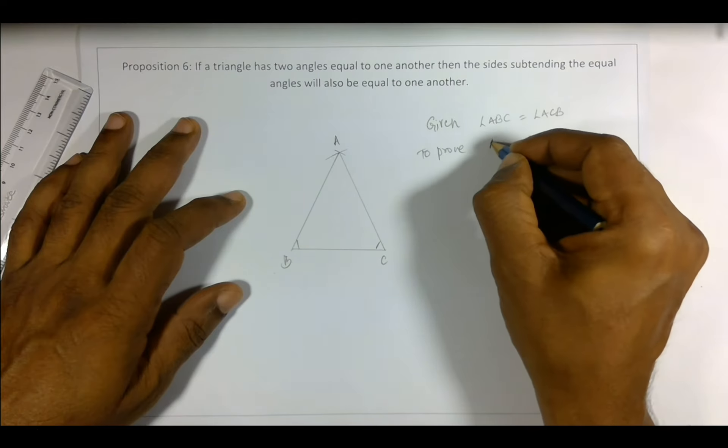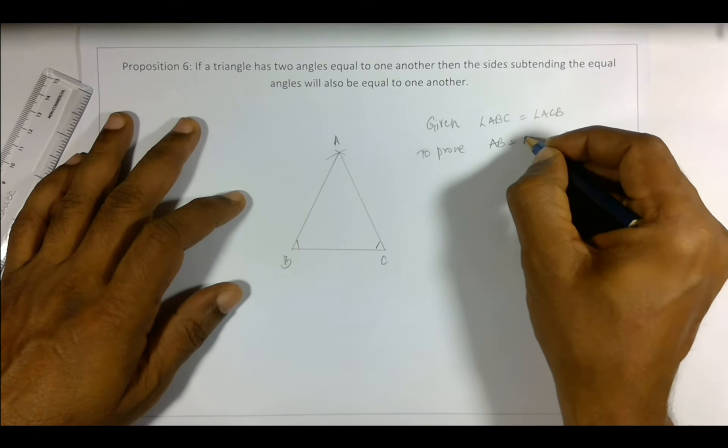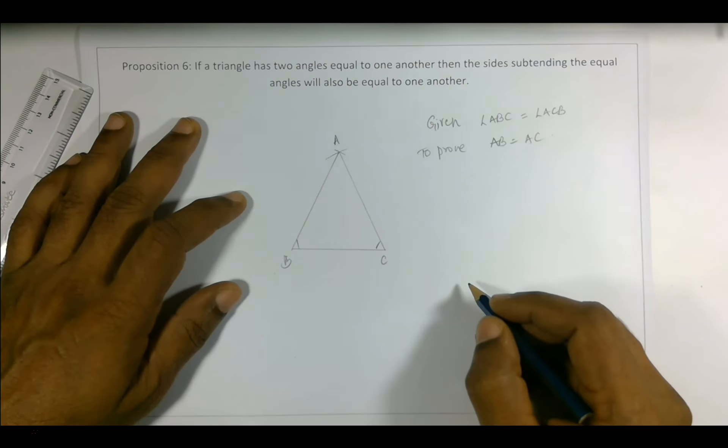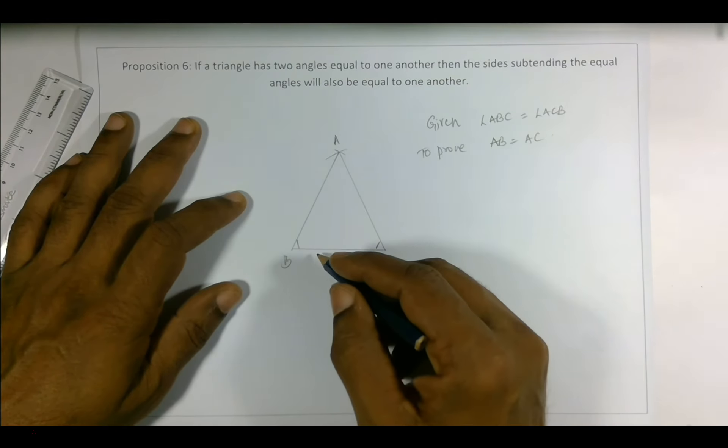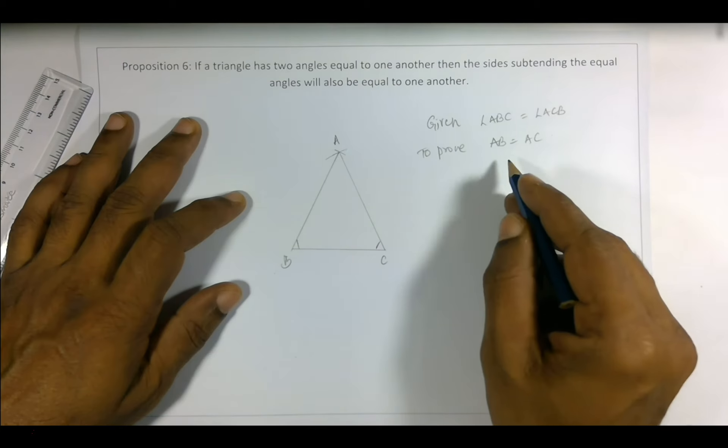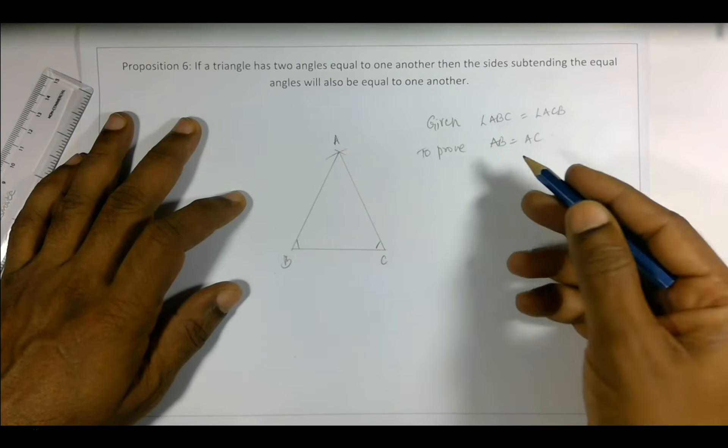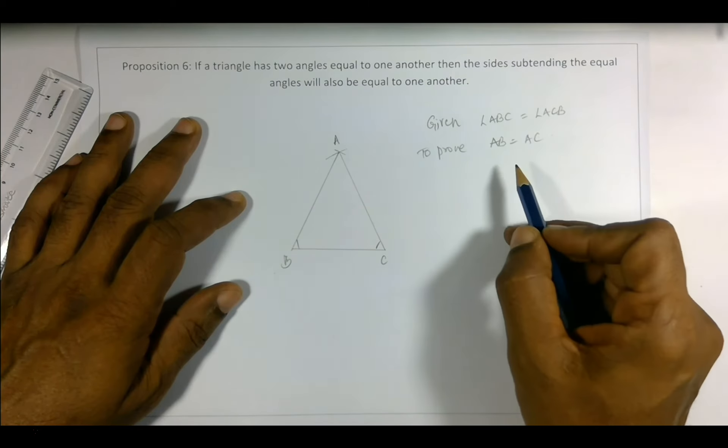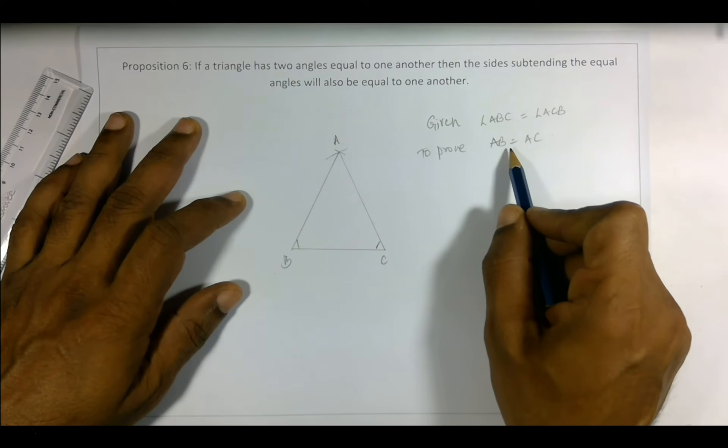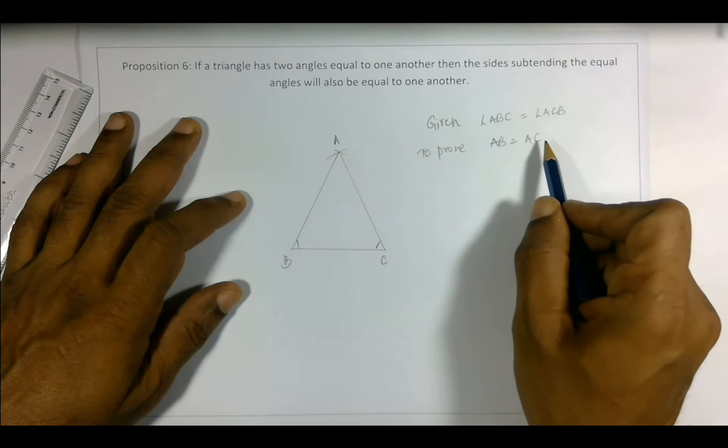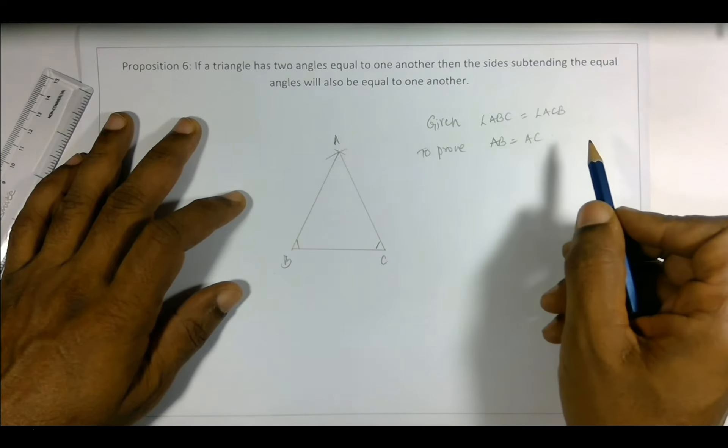...is that AB is equal to AC. So we have to prove, or we could also prove, that AB not equal to AC is wrong.